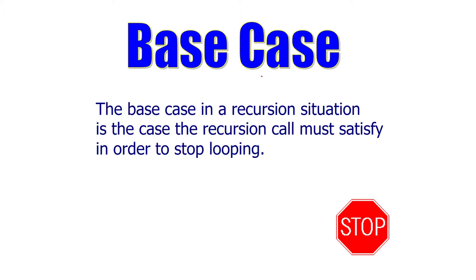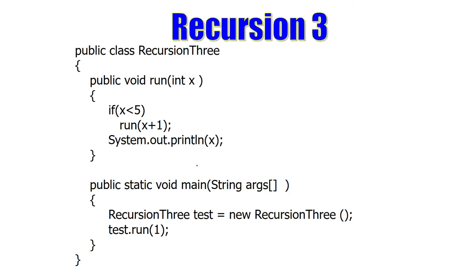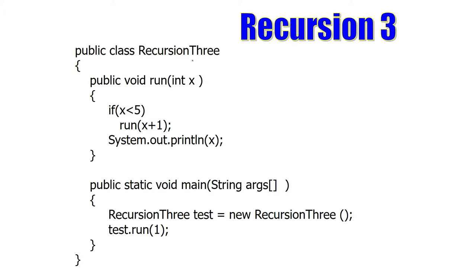The base case in a recursion situation is the case the recursion call must satisfy in order to stop looping. So, we have public class Recursion3, the run method, and then our tester class. This right here is our base case.